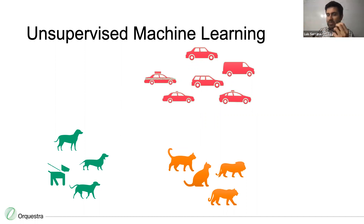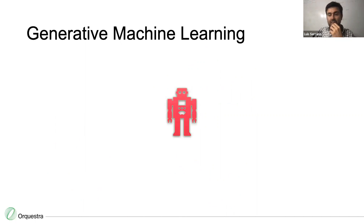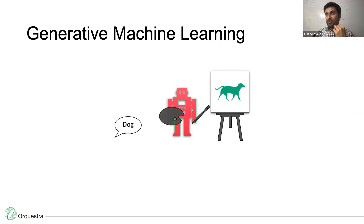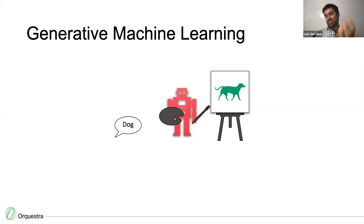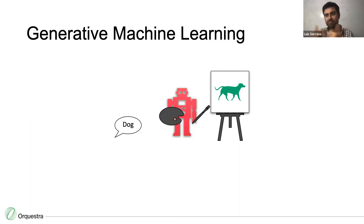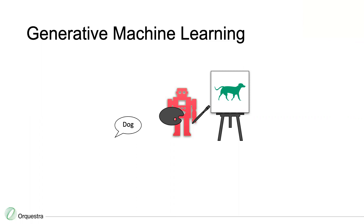One branch of unsupervised machine learning is generative machine learning, which is in some ways the backwards direction of supervised learning. Instead of learning to say 'give it an image, tell me if it's a dog,' it does the opposite — if you say 'show me a dog,' it actually draws one from scratch. If you've seen fake images of faces, there's a page called whichfaceisreal.com — these models create images, text, videos, music, or voice.